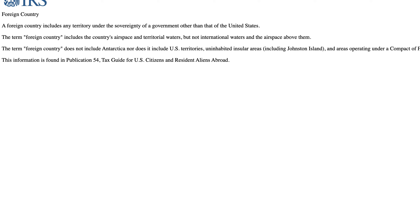A foreign country includes any territory under the sovereignty of a government besides the United States. This also includes the country's airspace and territorial waters, but not international waters and the airspace above them. The term foreign country also does not include Antarctica, U.S. territories, uninhabited insular areas, and areas operating under a compact of free association. You can find more information in IRS Publication 54, the tax guide for U.S. citizens and resident aliens abroad.